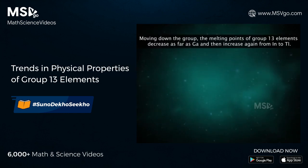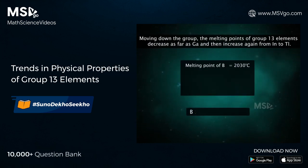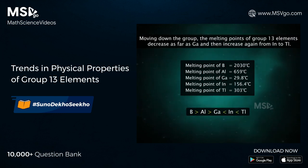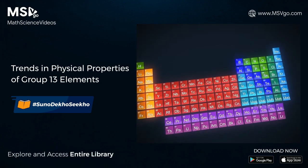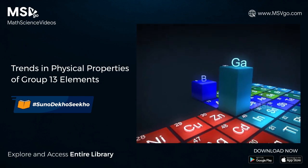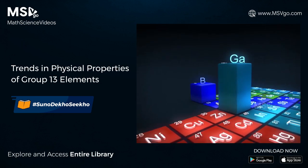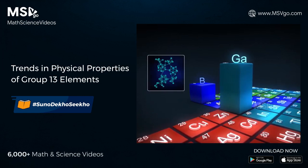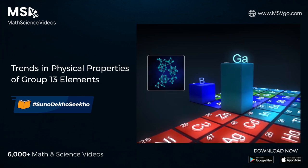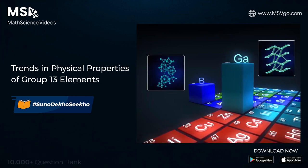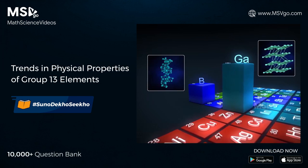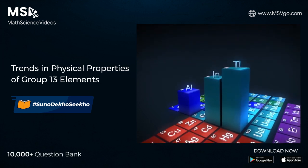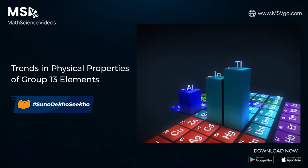The melting points of the elements of group 13 do not show a regular trend. The melting points decrease sharply from boron to gallium and then increase from gallium to thallium. This is due to the unusual crystal structures of boron and gallium. The melting point of boron is very high because it has an icosahedral structure. The melting point of gallium is very low because it has discrete diatomic molecules in its crystal. Aluminium, indium and thallium have close-packed structures.